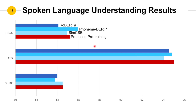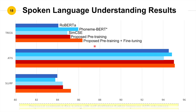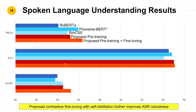Here are our fine-tuning results. The proposed fine-tuning methods further boost performance across the datasets, and we even outperform PhonimBERT on SNIPS. Although the improvement on ATIS is relatively small, it is mainly because of the label noise in the test set.